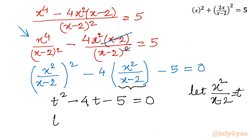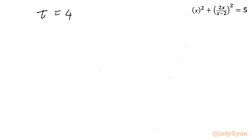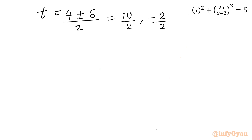The equation becomes t² - 4t - 5 = 0. Applying the quadratic formula: t = (4 ± √(16 + 20)) / 2 = (4 ± √36) / 2 = (4 ± 6) / 2. Taking the plus sign gives t = 10/2 = 5, and taking the minus sign gives t = -2/2 = -1. So t equals 5 and -1.